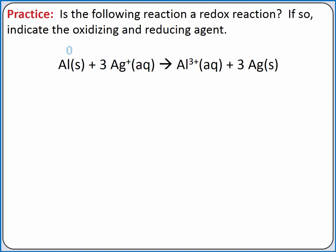Solid aluminum has an oxidation state of zero, because it is a free element. Aqueous silver ions are monatomic ions, so the oxidation state is equal to the charge, which is plus one. Aqueous aluminum ions are also monatomic ions, so the oxidation state is equal to plus three. And solid silver is a free element, so it has an oxidation state of zero.